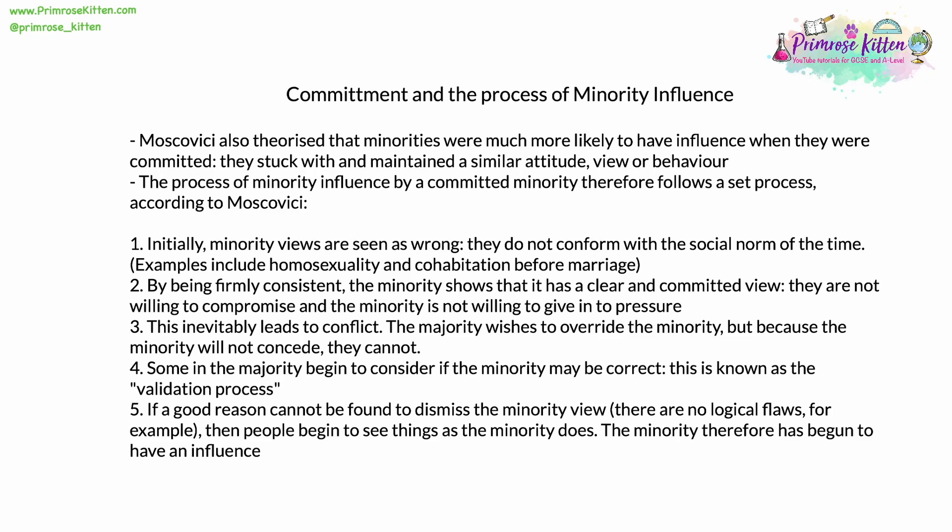Moscovici also theorised that minorities were much more likely to have influence when they were committed — they stuck with and maintained a similar attitude, view or behaviour, and were consistent. The process of minority influence by a committed minority therefore follows a set and known process. Number one: initially, minority views are seen as wrong. They do not conform with the social norm or normal social views of the time — think of the attitudes towards homosexuality in the 1940s and 50s, or cohabitation before marriage in the 50s and 60s.